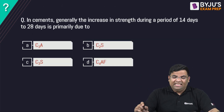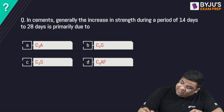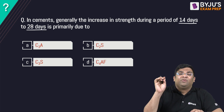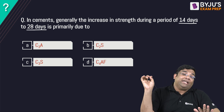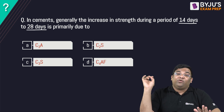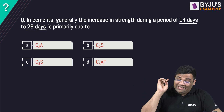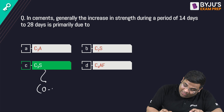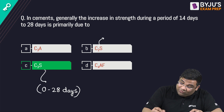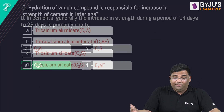Next question: The gain of strength in cement during the period of 14 to 28 days is primarily due to which compound? The answer is C3S only, because C3S is responsible for strength from 0 to 28 days, so 14 to 28 days falls within that period. C2S contributes to strength only after 28 days.